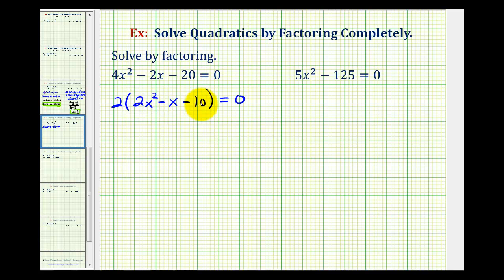If this trinomial factor does factor again, it would factor into two binomial factors where the first terms of the binomial factors would come from the factors of 2x squared. That'd have to be 2x and x.